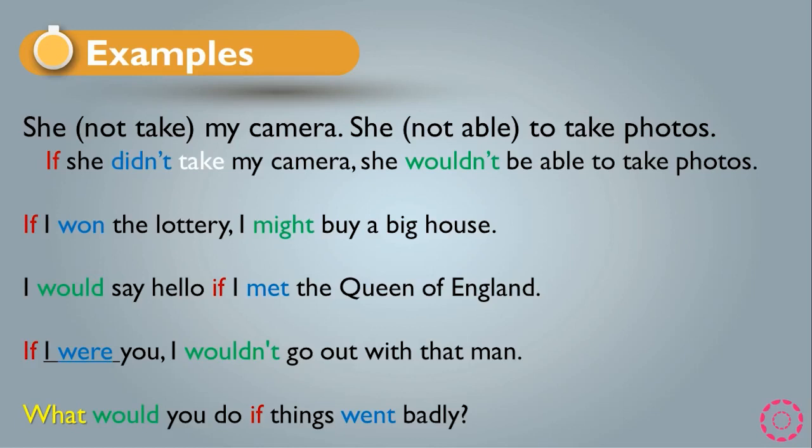Another example as a question: 'What would you do if things went badly?' This is a question in the second conditional. 'Things went badly' is the past simple clause, and 'what would you do' is the main clause with a WH-question.